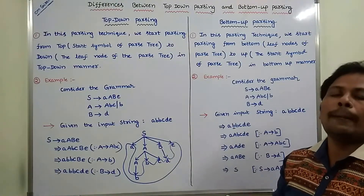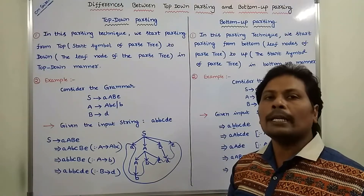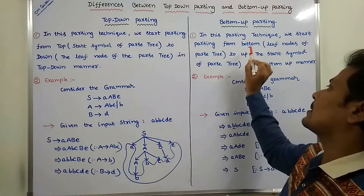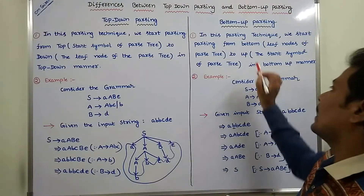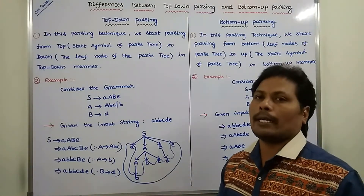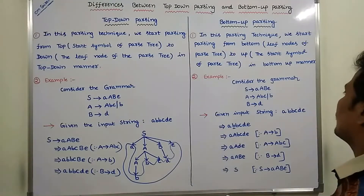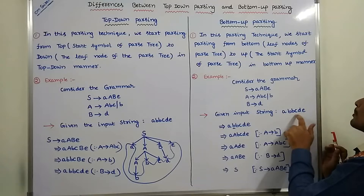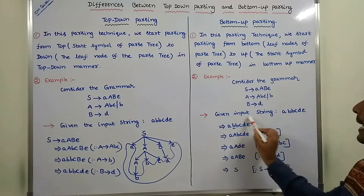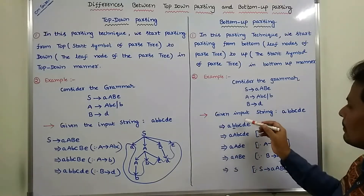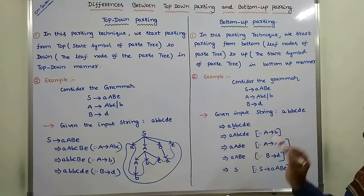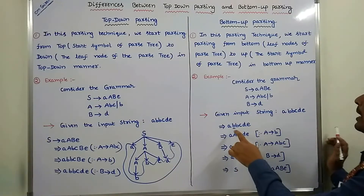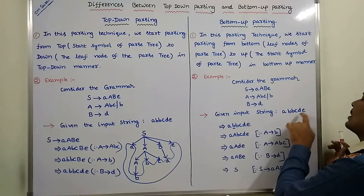Now we go for bottom-up parsing. In bottom-up parsing, we start from the bottom to top in a bottom-up manner. Here, bottom is nothing but the leaf nodes of the parse tree, and up is nothing but the start symbol of the parse tree. Consider the same grammar. The given input string is a, b, b, c, d, e. We take the given input string first, and from this input string we have to derive the start symbol of the parse tree. This is the reverse process.